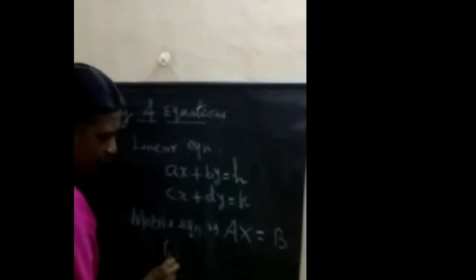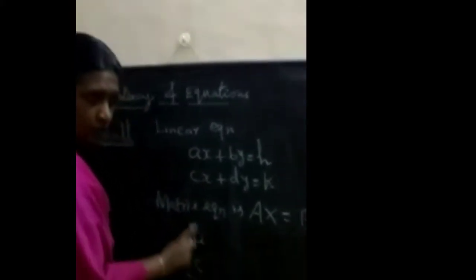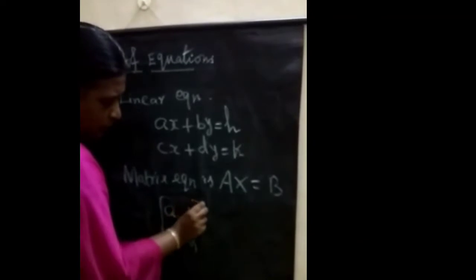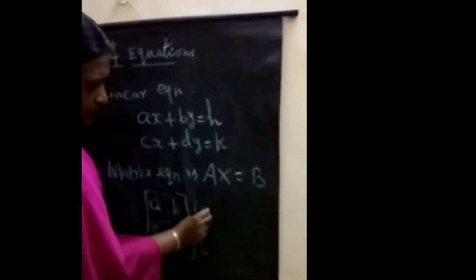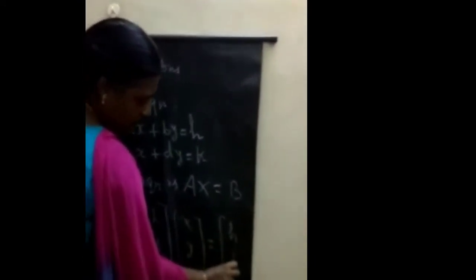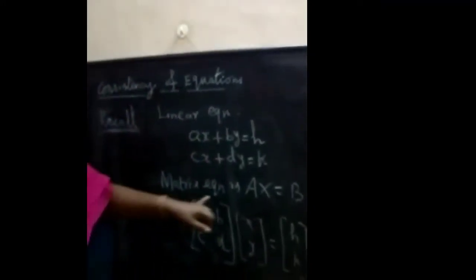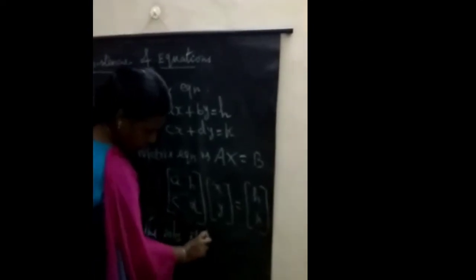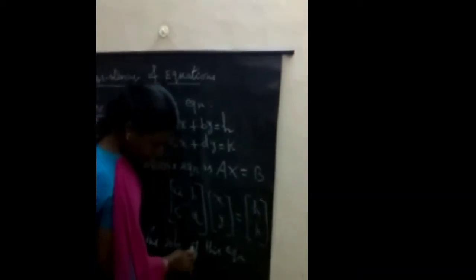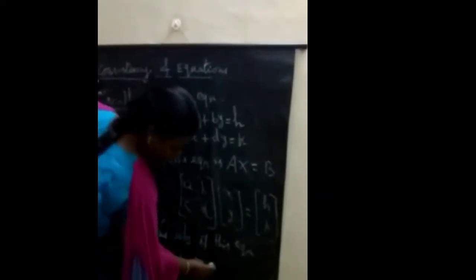So here, we write the coefficients in A, the variables X and Y as a column matrix, and the constants H and K as matrix B. The solution of this matrix equation is X equal to A inverse B.